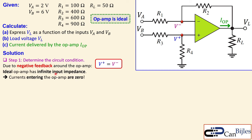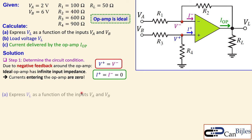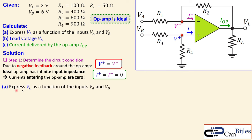Another important parameter is that the ideal op amp has an infinite input impedance or input resistance. So the currents entering the op amp, I+ and I−, are both zero. We can say I+ equals I− equals zero. This is also very useful for the later discussion.